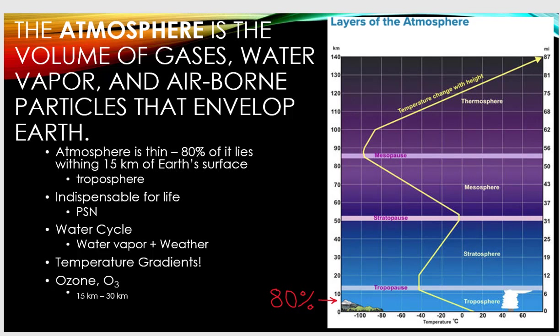Other things happening in the troposphere include photosynthesis — essential for life — and the water cycle: evaporation, condensation, and precipitation, all of which we've talked about or will talk about more later. What's really determining these bands — the troposphere and stratosphere — are the temperature gradients. The gradient is the steepness or slope of the temperature line. It's pretty steep in the troposphere, and there's quite a bit of temperature change as you move to higher elevations, compared to the stratosphere.